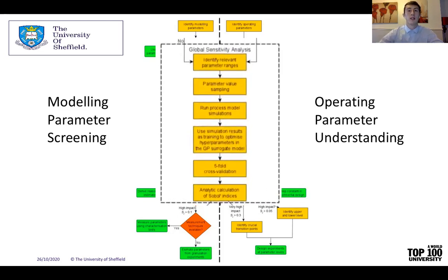This work applies the Sobol indices technique for the GSA. Because of the complexity of the PBM computer model, the traditional method of computing Sobol indices using Monte Carlo techniques is impractical for this research. Therefore, as the workflow shows, we used the underlying computational model to sample enough training data to optimize a machine learning technique called Gaussian processes, often abbreviated to GPs. The GPs are then validated and used to analytically calculate the Sobol indices. Please remember that we are conducting two GSAs — one for modelling parameters and one for the operating parameters.